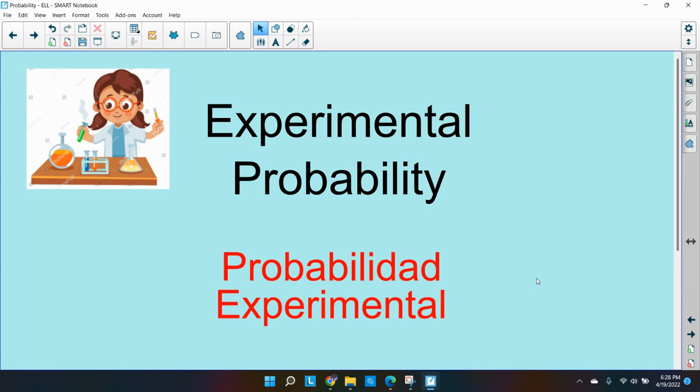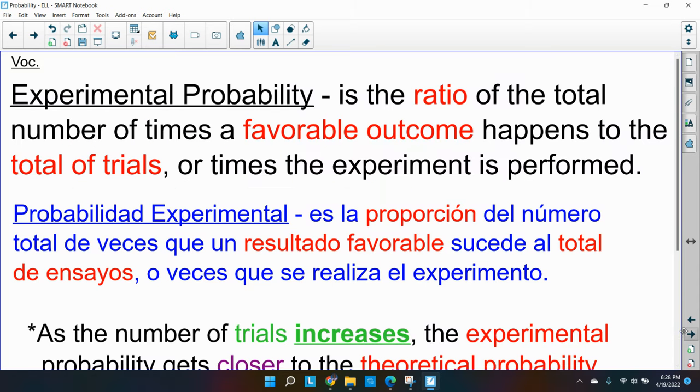Today we're going to continue our studies. We are talking about experimental probability. So we're going to do a little experimenting. First of all, experimental probability is the ratio or fraction decimal percentage of the total number of times a favorable outcome happens to the total of the trials or the times the experiment is performed.